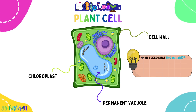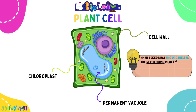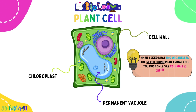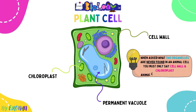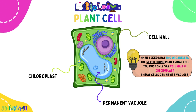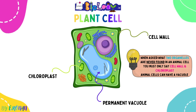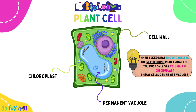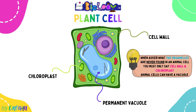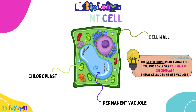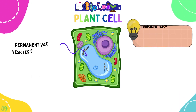Now for the structures unique to the plant cell: cell wall, chloroplasts, and permanent vacuole. If asked what two organelles are never found in an animal cell, you can only say cell wall and chloroplast. You cannot say vacuole, because animal cells can sometimes have a vacuole — it is sometimes present in an animal cell, so you can't use that as an answer.